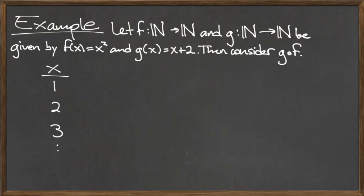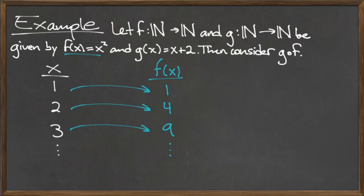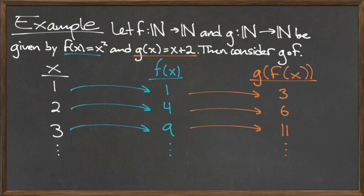When x is equal to 1, we find that f of x is equal to 1 squared, which is 1. So to compute g of f of 1, we need to plug the result from f of x, which is 1, into the function g. g of 1 is equal to 1 plus 2, which is 3. So g compose f of 1 is equal to 3.